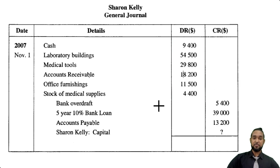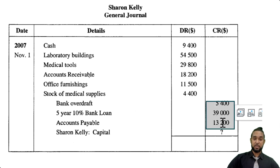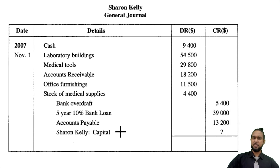Then we have bank overdraft, a five-year 10% bank loan, and accounts payable, which are all liabilities with credit balances. But they did say it was an incomplete opening entry because we're missing the capital.